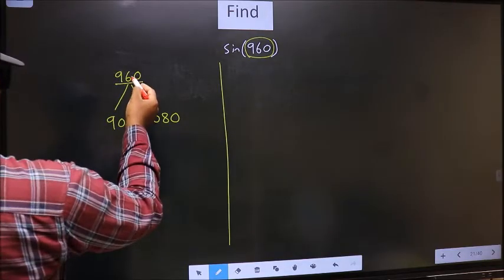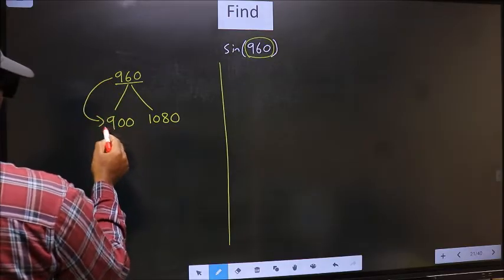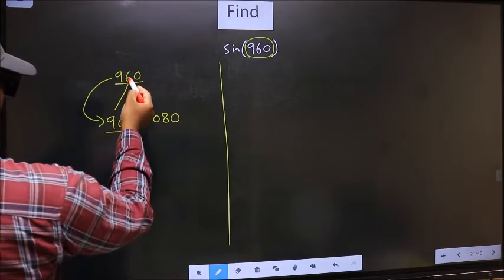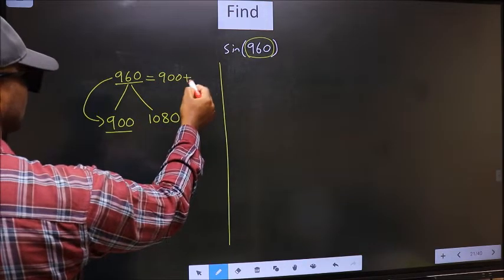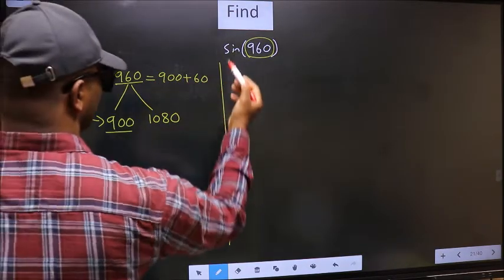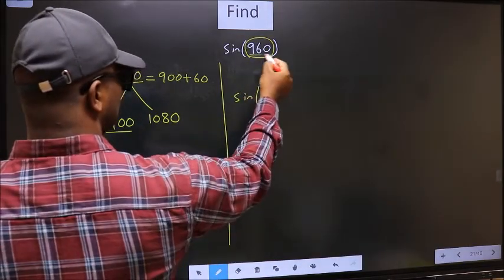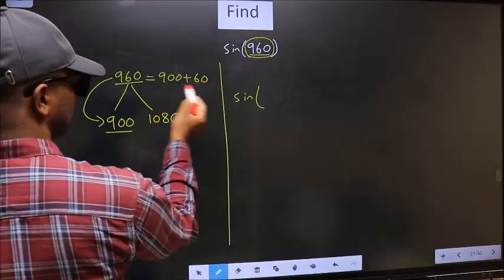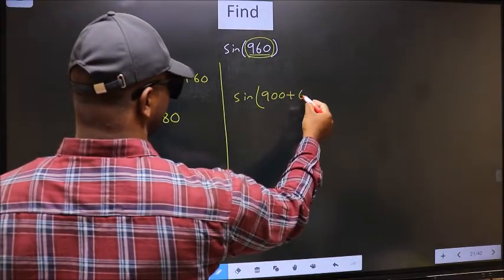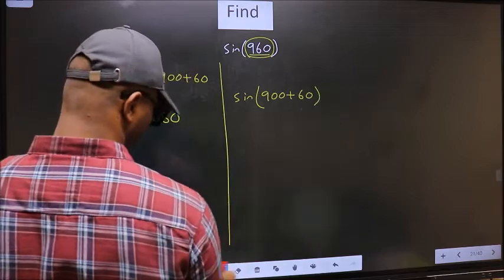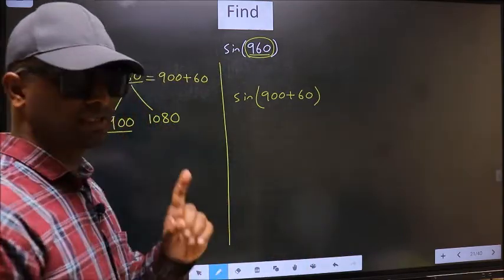Next, now this number is close to which number? This is close to 900. So 960 now should be written as 900 plus 60. So this will become sin. In place of this, we should write this one: 900 plus 60. This is your step 1.